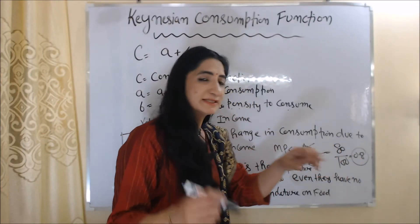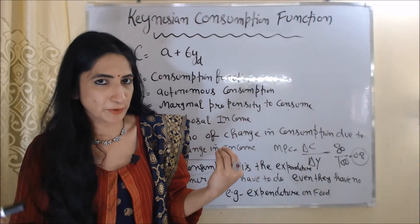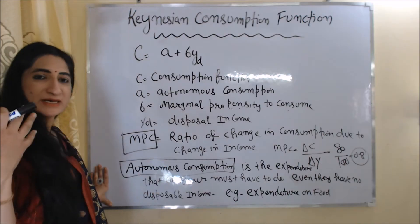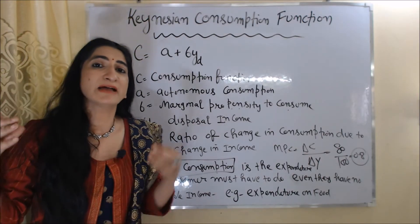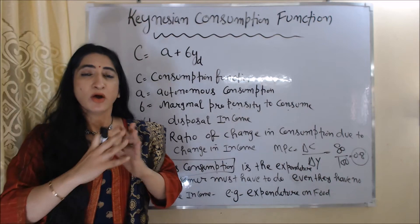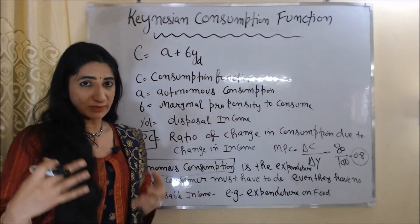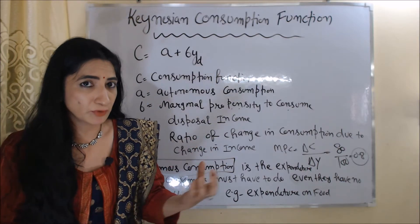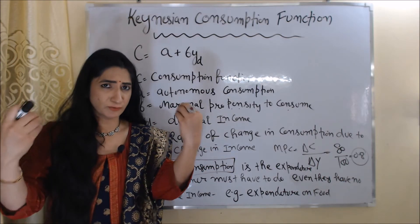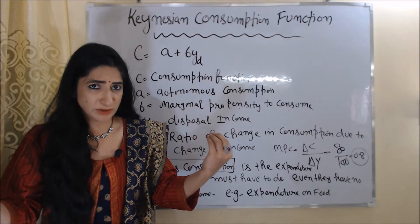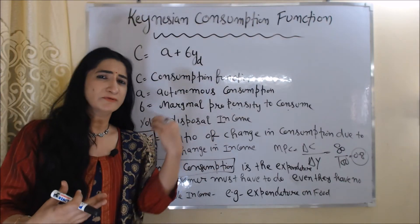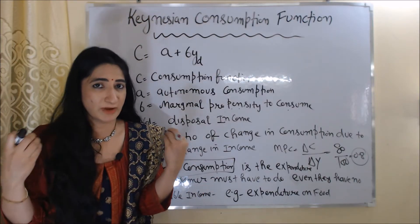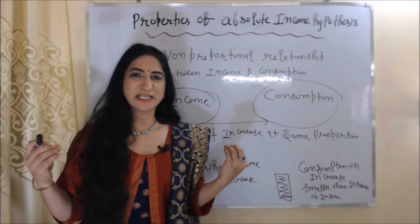Autonomous consumption is the expenditure that a consumer must make even when they don't have any disposable income. For example, expenditure on food — a consumer has to make expenditure on food for survival even when they have no disposable income. They can borrow money from someone or use their past savings, but they must make expenditure on food for survival.